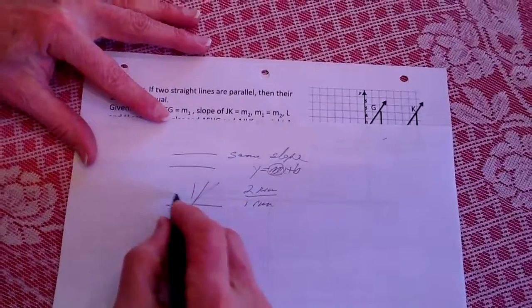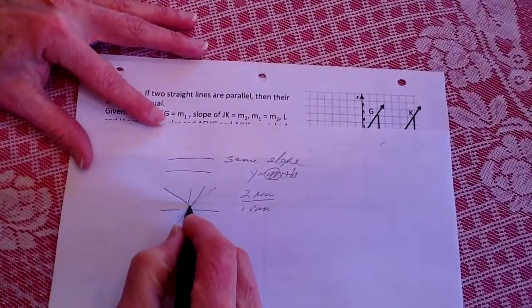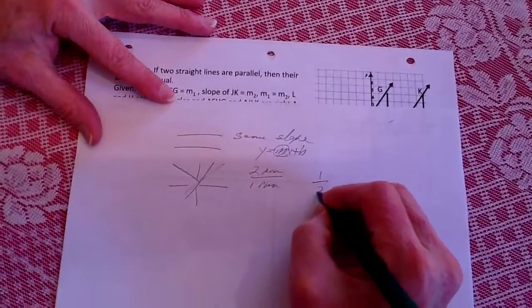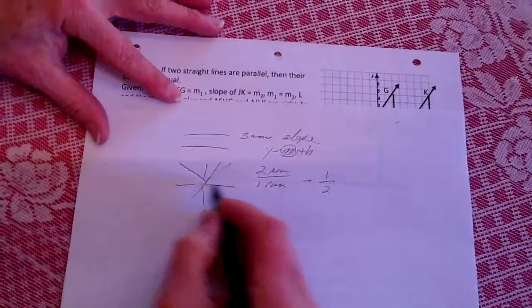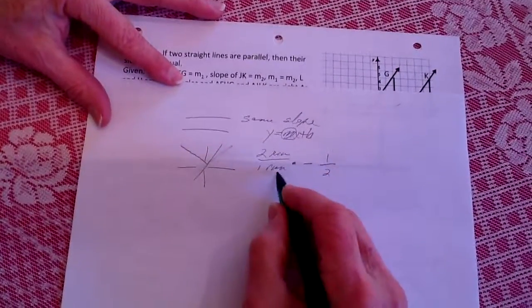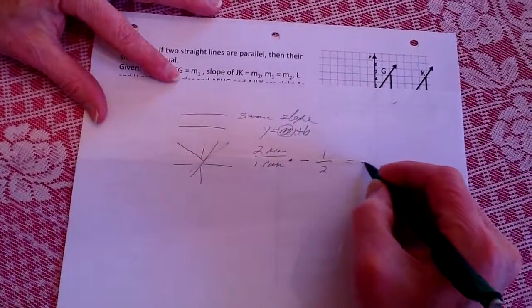Now, for the line to be perpendicular to that, we know from algebra that that's going to end up being 1 over 2, a negative 1 over 2, which would be down this way. So if I multiplied these two together, what would I get? I'd end up being a negative 1.